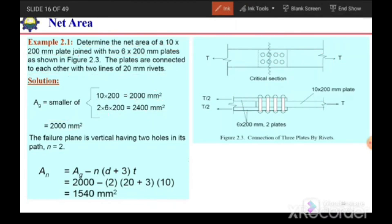The failure plane is vertical having two holes in its section, so n is two. So now we need to calculate the net area.